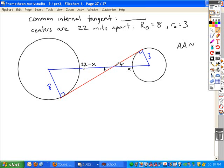So here's 22 minus X and X. So you could set up your ratios since you have similar triangles. You could say that X over 22 minus X is equal to what ratio? 3 over 8. And then you can cross multiply and solve for X. And that's one possibility.